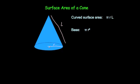Let's do an example. Here we've got a cone with a perpendicular height of 8 centimeters, a radius of 6 centimeters, and a slant height of 10 centimeters.